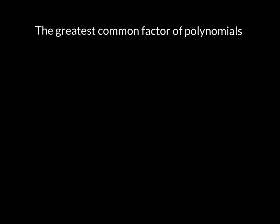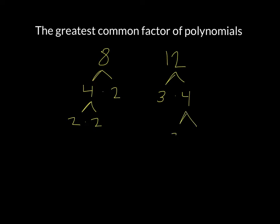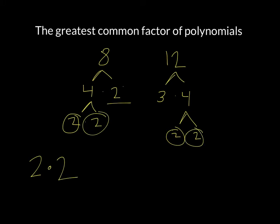Let's say I have the numbers 8 and 12. If we break 8 and 12 down to their prime factorization, 8 is 4 times 2, and then 2 times 2. 12 would be 3 times 4, and then 2 times 2. To find the greatest common factor, we have a 2 and a 2, and then another 2 and another 2. The last factorization we have 2 and 3 — those are not in common. So 2 times 2 is 4, meaning the greatest common factor between 8 and 12 is 4.